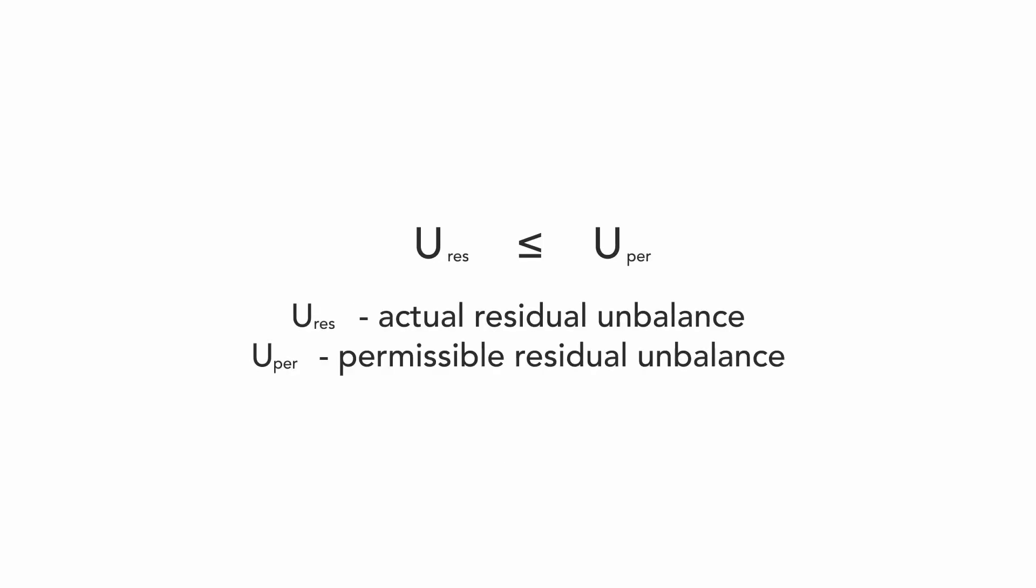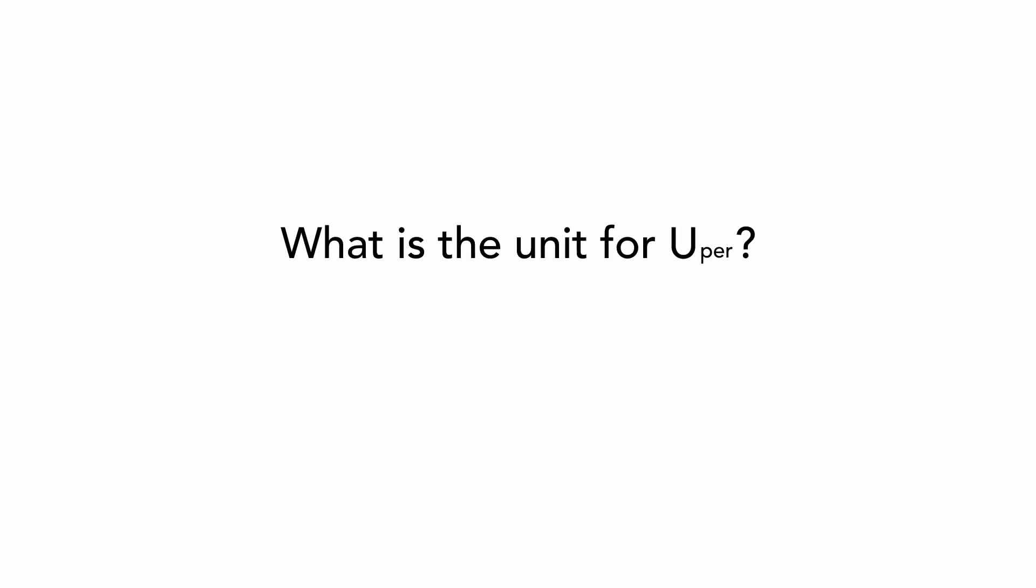By next other words, what is the acceptable or permissible residual unbalance? To obtain a satisfactory running of the rotor, the residual unbalance U-res should not be higher than a permissible value U-per. What is the unit for U-per? The SI unit is kilogram times meter. But more practical is gram times millimeter. I will explain it later.